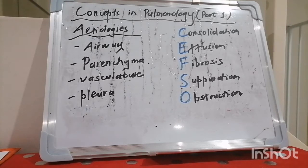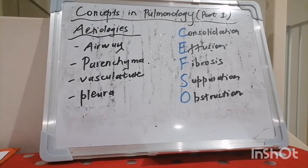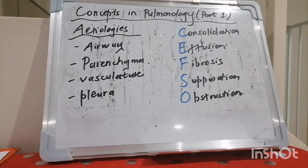Viral examples: the notorious COVID pneumonia — don't forget that. Then influenza, parainfluenza, metapneumovirus, respiratory syncytial virus, adenovirus. Fungal examples: blastomycosis, cryptococcus, and histoplasmosis.